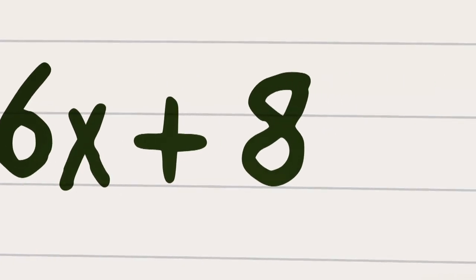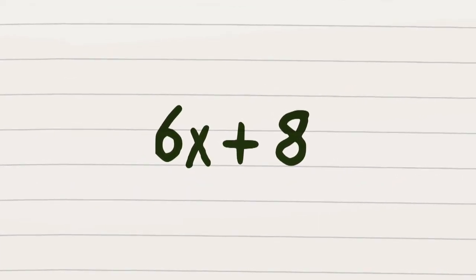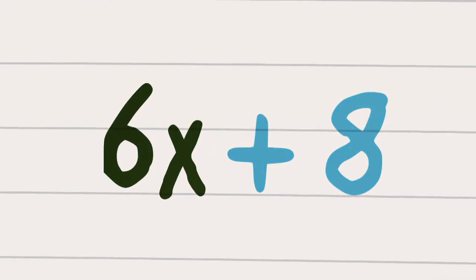But x squared means it will be a quadratic. Take for example 6x plus 8. We got some factors that we need to locate, you know, the numbers that go into both.